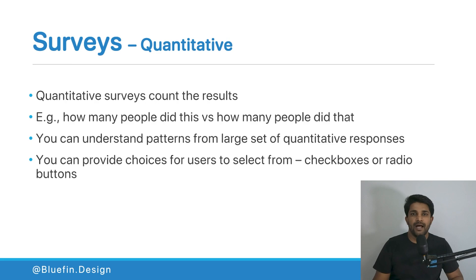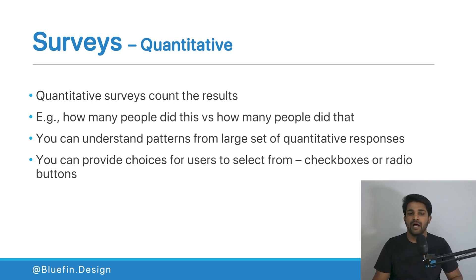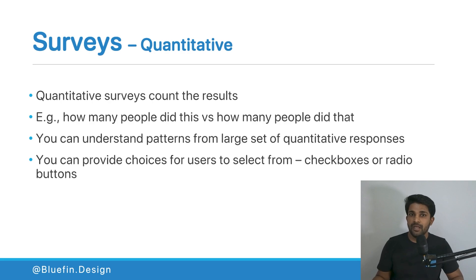What is a quantitative survey? These count the results — any question where the answer comes in the form of numbers or quantities. For example, how many people went to a particular location versus how they got there. You can understand patterns from a large set of quantitative responses. If 60 out of 100 respondents use a particular product over a competitor, you can identify that 60% of your user base is inclined toward that product.